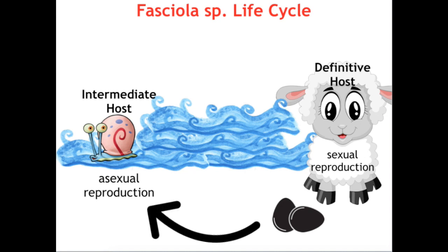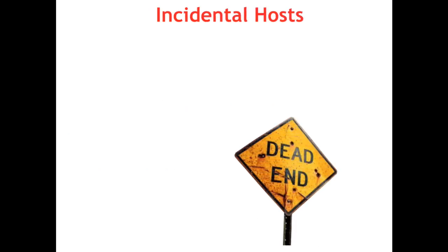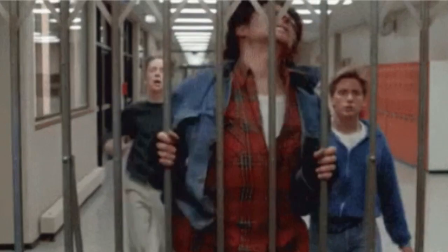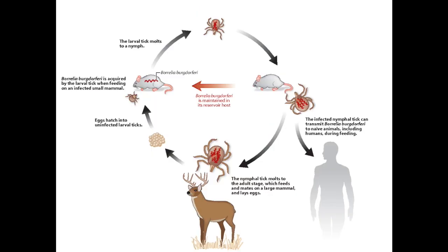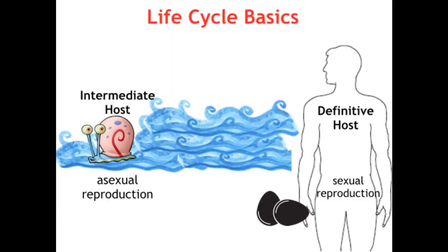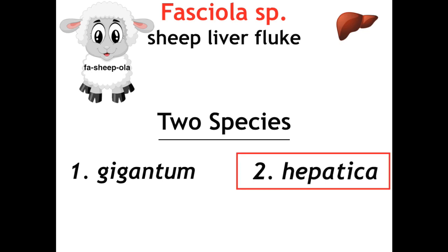We can act as the definitive host if we ingest contaminated vegetation or water. This does not mean we are incidental or dead-end hosts — that concept only refers to cases where we cannot propagate a parasite's life cycle. For trematodes as a whole, even if we aren't their typical hosts, we are mammals able to ingest the infectious form and propagate the life cycle. There are technically two species — Fasciola gigantea and hepatica — but hepatica is most commonly tested and easily remembered as the liver fluke.